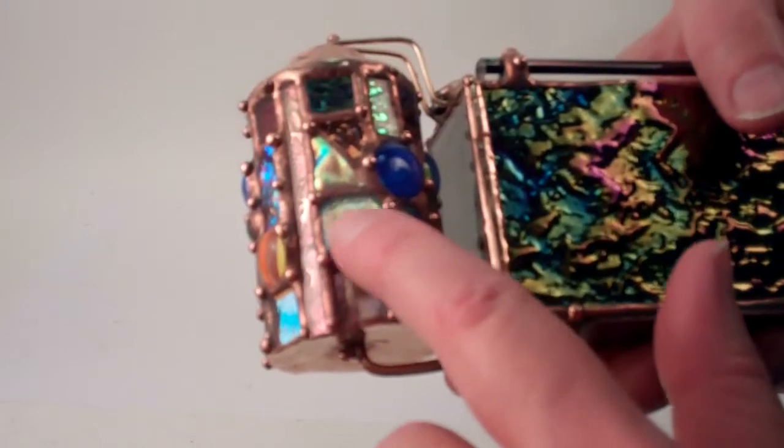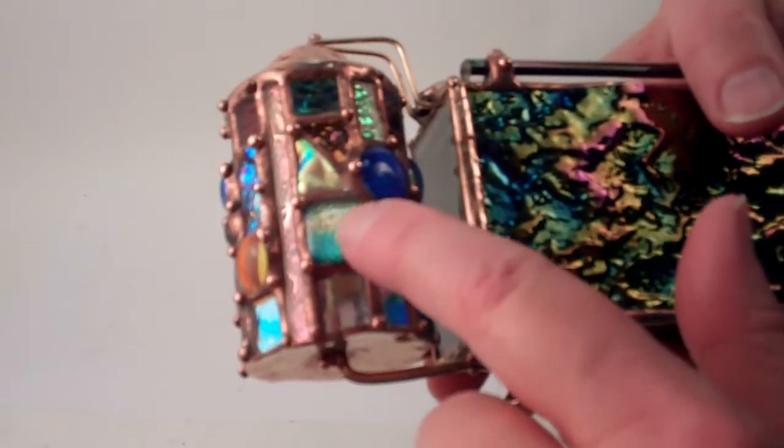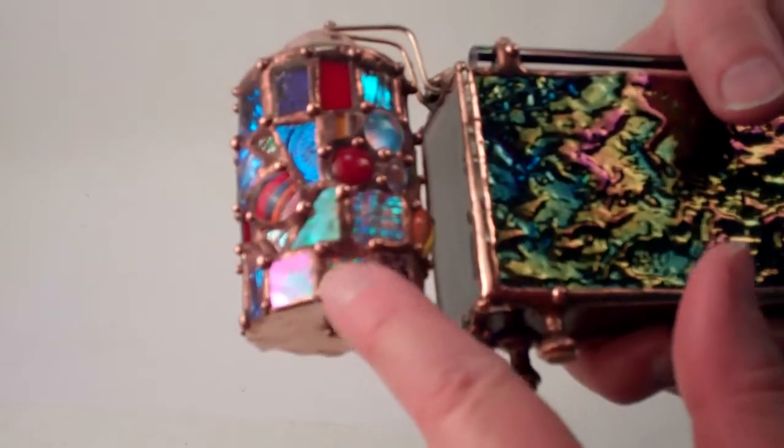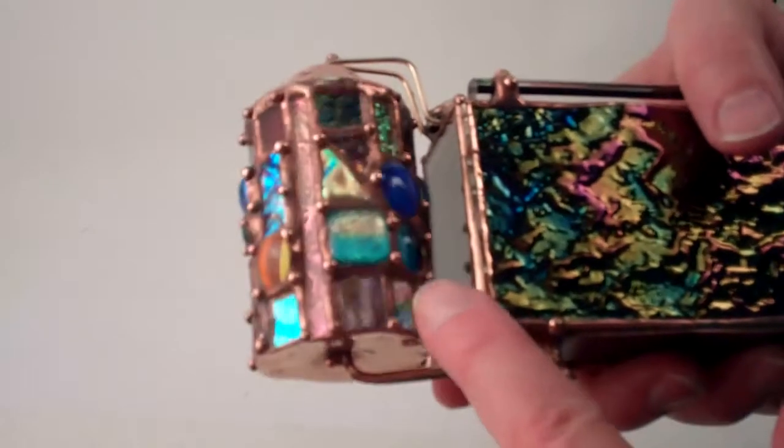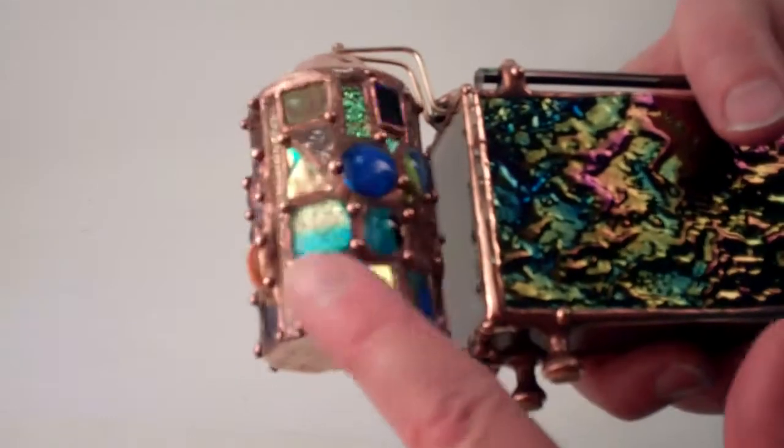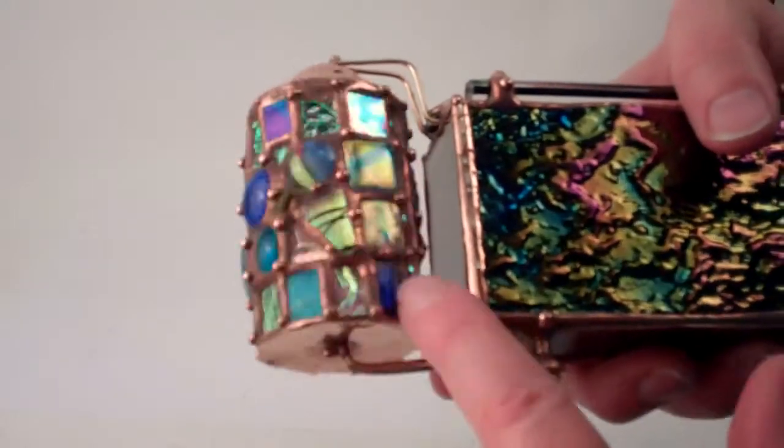This is another fused dichroic glass piece, this one and this one. So it's an incredible assortment of textures, colors, and refraction of light to create this beautiful barrel at the end of the kaleidoscope.